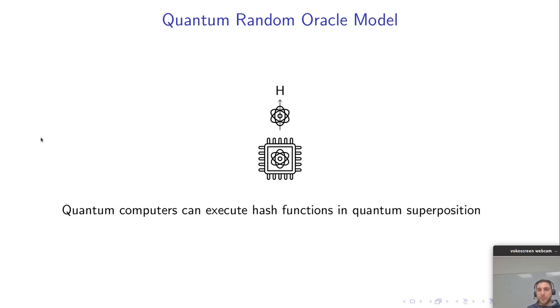So in our title we say we studied in the quantum random oracle model, so what's the quantum random oracle model? Well if you want to study the quantum resistance of schemes and we're in the random oracle model, then we have to assume actually quantum access to the hash function because a quantum computer can compute the hash function